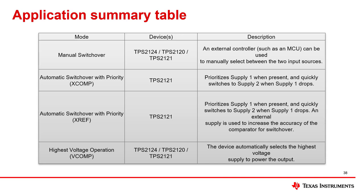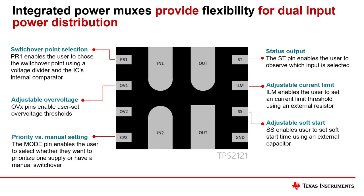This table details the recommended devices for each power muxing application described in the first video of this series. For high voltage applications, manual switchover or automatic OR-ing can use any of these devices, but for automatic switchover with priority, the TPS2121 is recommended. Taking a closer look at the TPS2121, we can see the features it offers, described in further detail in the previous video module. For more information on designing the schematic for this device, please refer to the next module and the design calculator link below.